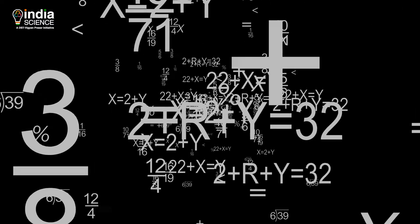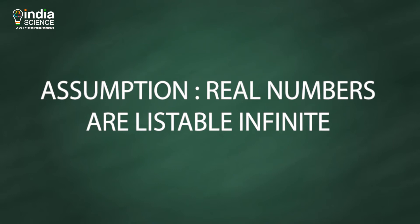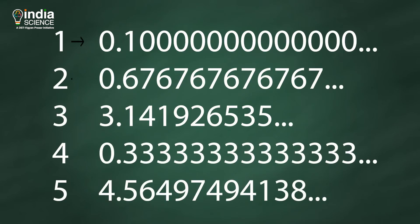To see this, we can use an extremely powerful technique in mathematics, proved by contradiction. We will start by assuming that the real numbers are listable infinite, like other numbers. So let's take some random real numbers, like this.